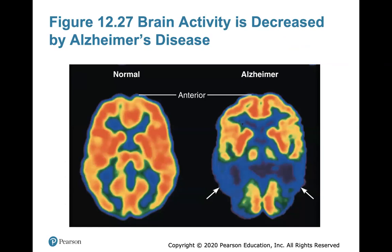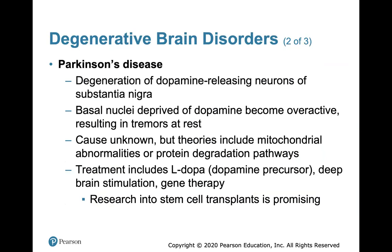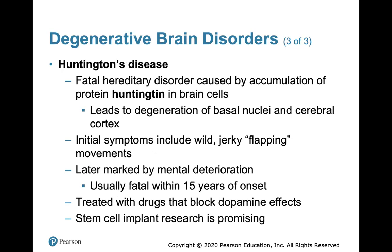Parkinson's disease is the degeneration of the dopamine-releasing neurons of the substantia nigra, accompanied by tremors and inability to control movements. There's no treatment, but research into stem cell transplants is promising. Huntington's disease is a fatal hereditary disorder caused by the accumulation of the protein Huntingtin in brain cells. Initial symptoms involve wild jerky flapping movements, later marked by mental deterioration, and it's usually fatal within 15 years of onset. It's scary because the gene may not present itself until later in life. It can be treated with drugs that block dopamine effects.